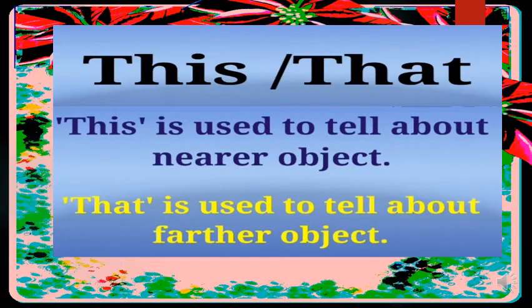Here you can see that it is written: 'this' is used to tell about a nearer object — meaning which is near to us. 'That' is used to tell about a farther object, that is far away. So that is the difference between 'this' and 'that'. Let's see some examples and learn a bit more.